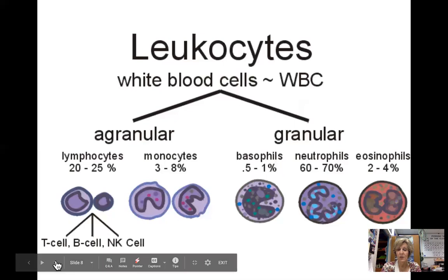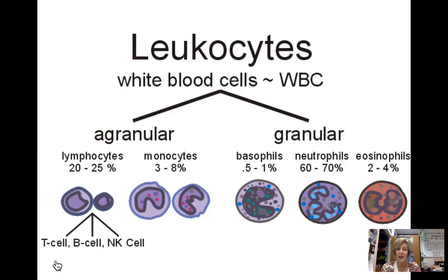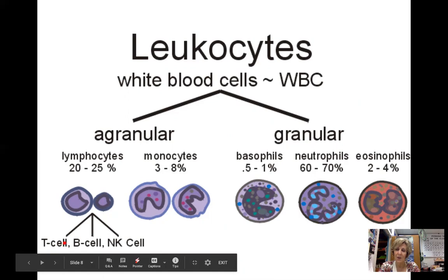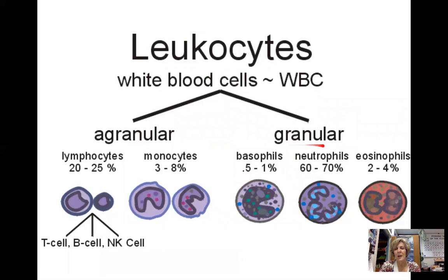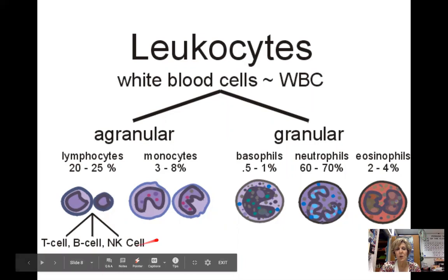In histology or lab technology training, you look under a microscope to distinguish these cells. One way to classify them is whether they have little granules in their cytoplasm or not. We call the granule-bearing group granulocytes, and those without granules agranulocytes. Agranulocytes include lymphocytes — about 20 to 25% of leukocytes — which are T cells, B cells, or natural killer cells. Monocytes develop into macrophages, the big cell eaters. Granulocytes have other specific jobs as well.